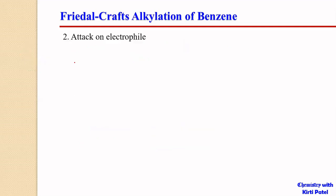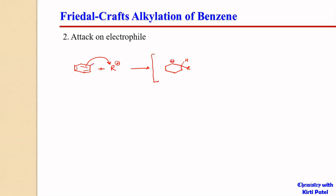This electrophile that is generated reacts with benzene. Benzene has a pi-cloud of 6 pi-electrons. The positively charged alkyl group R+ attacks this pi-cloud, forming a new carbon-carbon bond. A positive charge develops on the benzene ring carbon as the pi-electrons are used to form the bond with R.